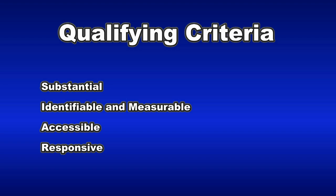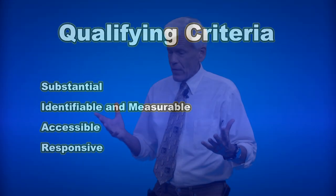First, it's got to be substantial — large enough to be profitable for us. It's got to be identifiable and measurable: who is it, how many are there? That was the issue we talked about with social service agencies putting together drug and alcohol programs. Then accessibility: can I reach them? That was the question with target markets like the homeless or undocumented aliens — how can I get to these people?